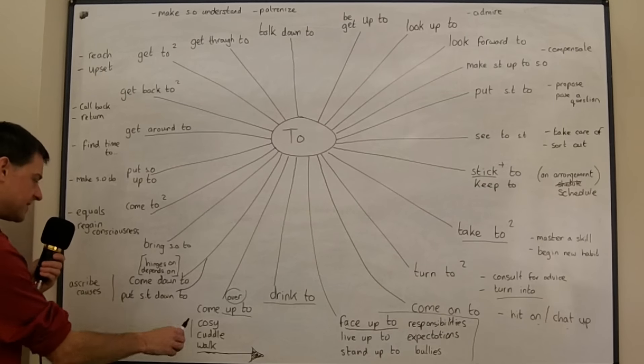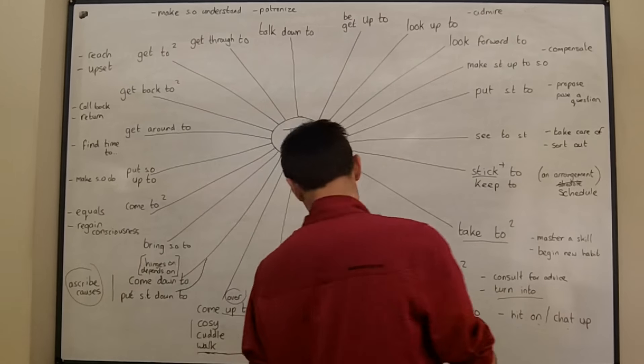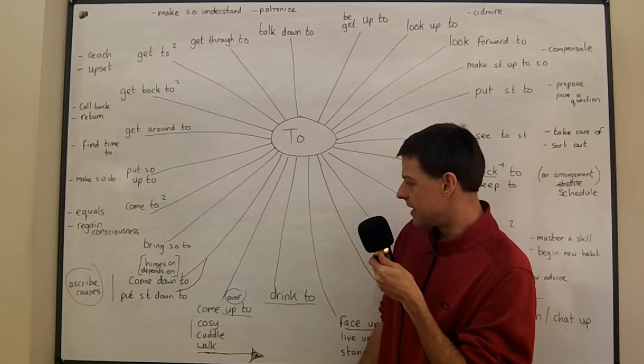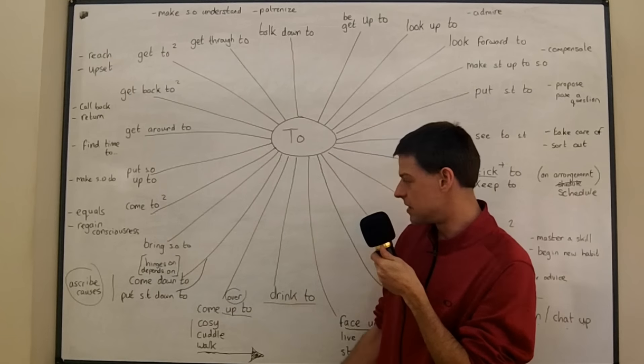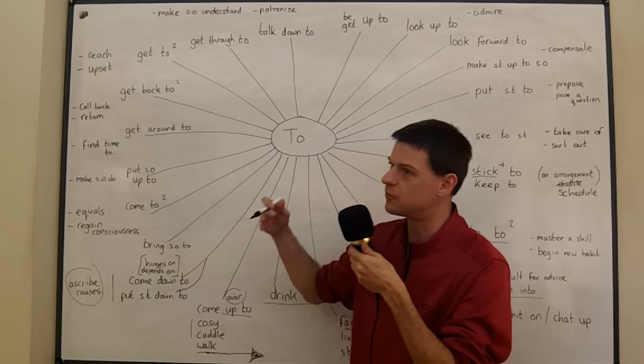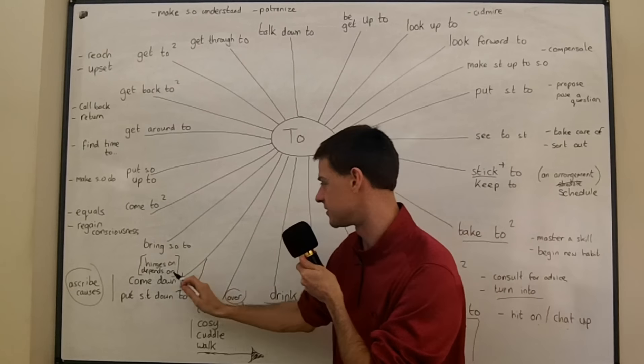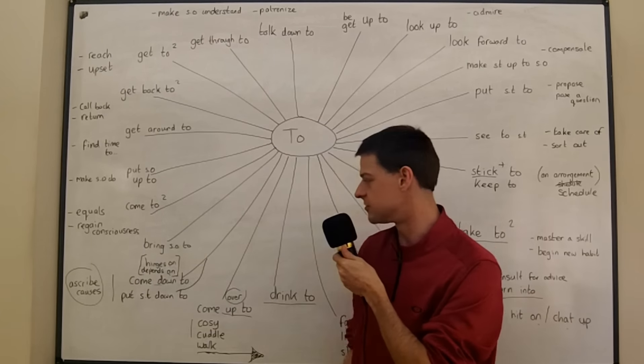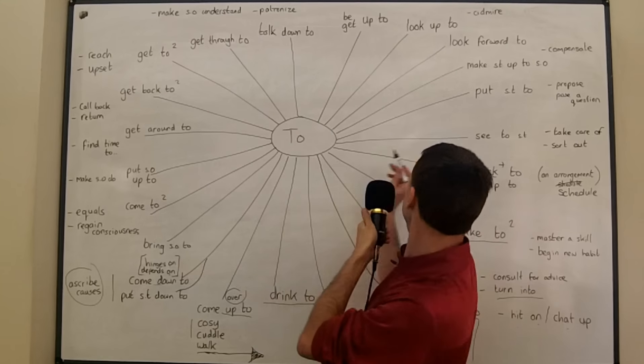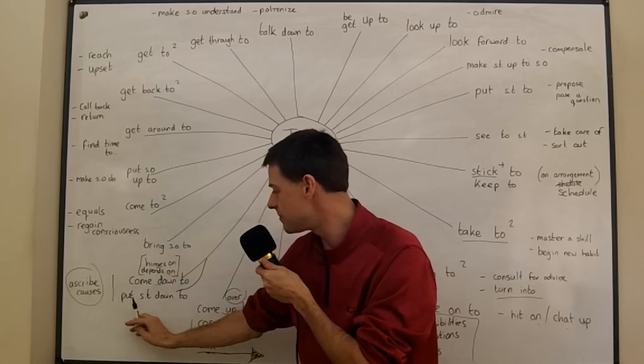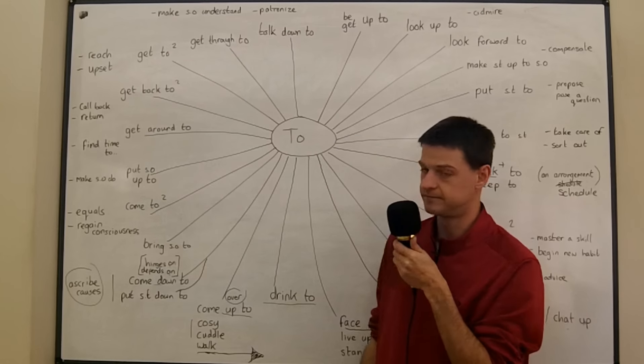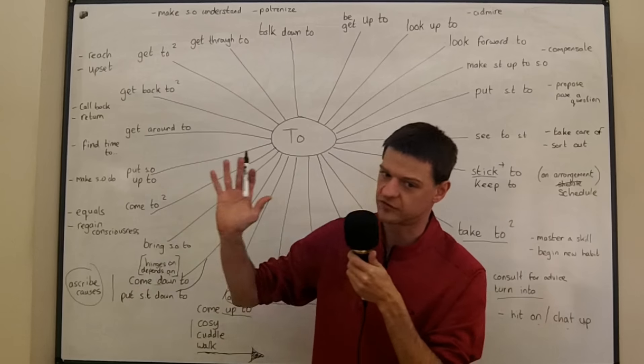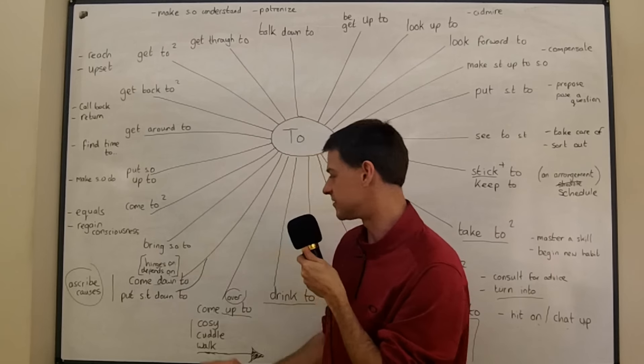Now if we say comes down to or put something down to, we're ascribing causes, we're talking about why something happened, we're giving reasons for why something happened. So we might say global warming comes down to the sun, and then we would mean that the reason why the planet's getting hotter is because the sun's getting hotter. And so we're saying that it depends on the sun, it hinges on the sun. We use it to ascribe causes. But we could also put it like this, we could say I put global warming down to the effects of the sun, solar effects or solar cycles or something like this. And you're saying that the cause of global warming is that. That's what you're doing, you're ascribing causes. Very common these two, very common, please learn them, please use them.